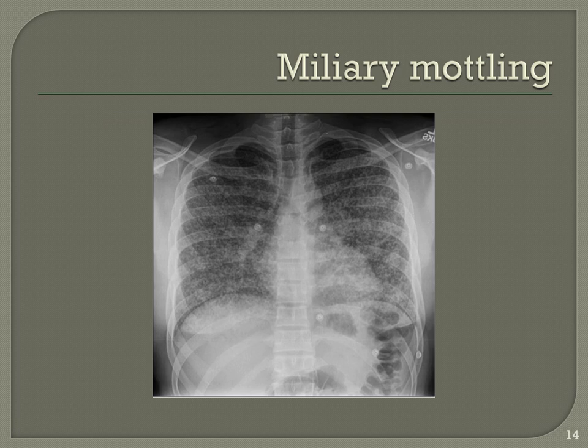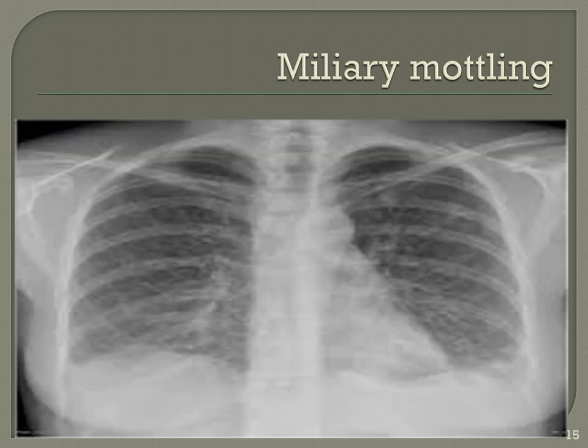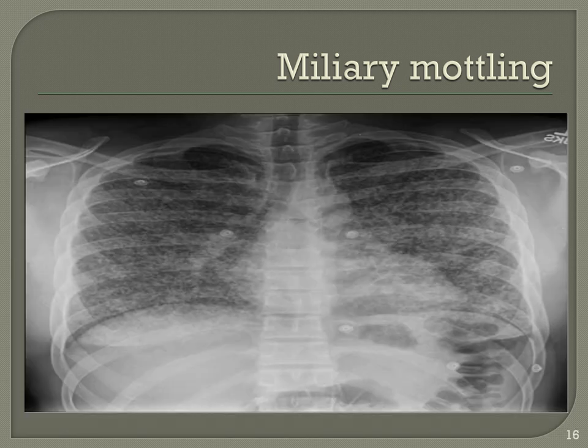Miliary mottling: you can see small minute opacities involving both lungs — this is classical miliary mottling. This patient was a 25-year-old male who was HIV positive, presenting with low-grade fever for 3 weeks associated with cough, sputum, and shortness of breath. This is a classical example of miliary mottling. Another patient was put on steroids for a respiratory disease like asthma, became immunocompromised, and ultimately developed miliary mottling — again tuberculosis.